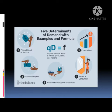The five functions are: the first is price of goods or services, the second is income of buyers, the third is prices of related goods or services, the fourth is taste of consumers, and the last one is expectations. Now, we will see them one by one.